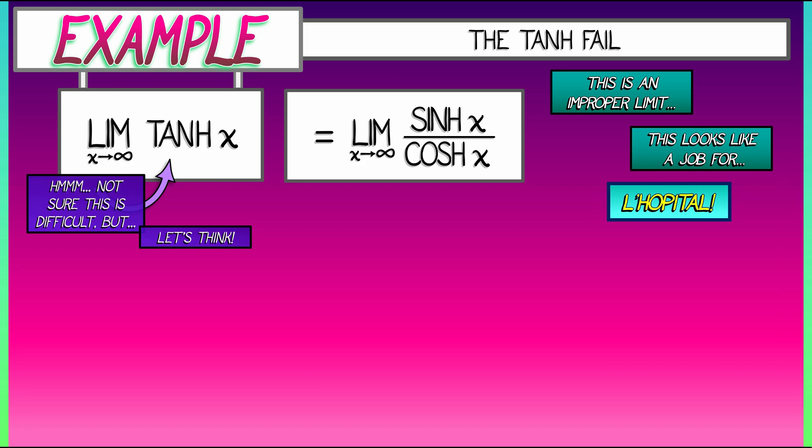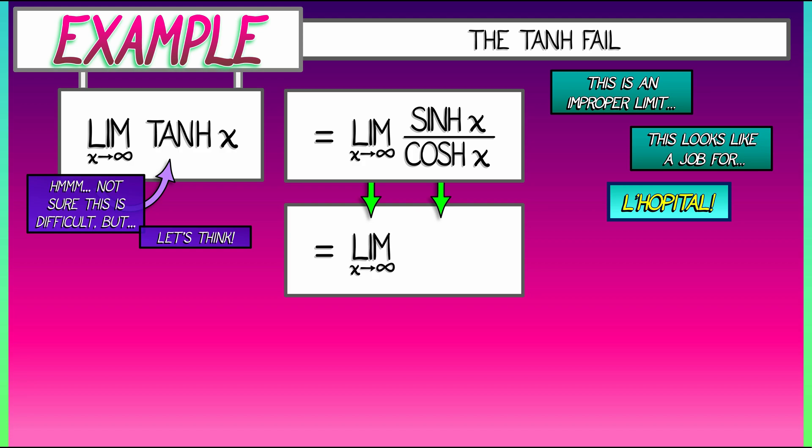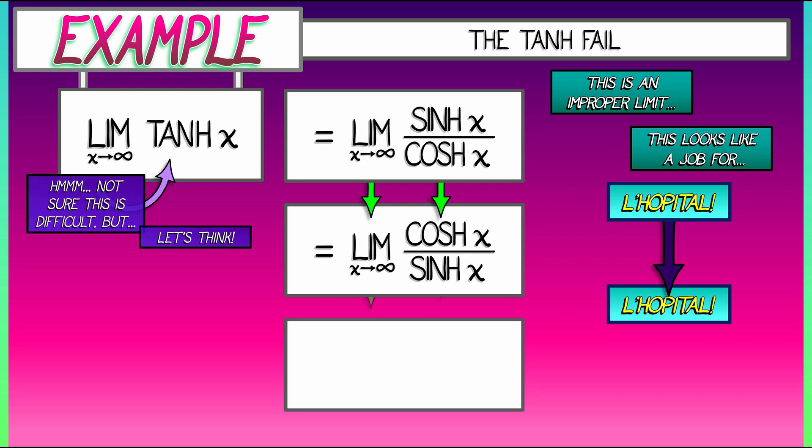Do I know what the derivative of sinh is? Yes, it's cosh. What's the derivative of cosh? Oh, it's sinh. This is so easy. So, applying L'Hopital's rule, I have to now evaluate the limit as x goes to infinity of cosh over sinh. But that's still infinity over infinity. That's still an improper limit. No worries. I'm just going to apply L'Hopital's rule again. This is going to be great.